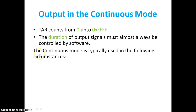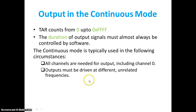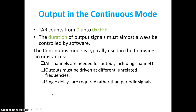Now let us consider a scenario. Continuous mode is typically used in the following circumstances: when all channels require a timer clock — that is, all channels are needed for output including channel 0. The output must be driven at different and unrelated frequencies — one operating at 100 kHz, another at 100 Hz or 500 Hz. You may want periodic delays or even a single delay rather than a periodic delay.